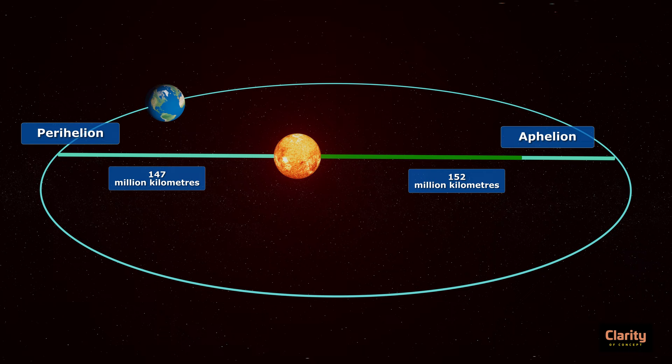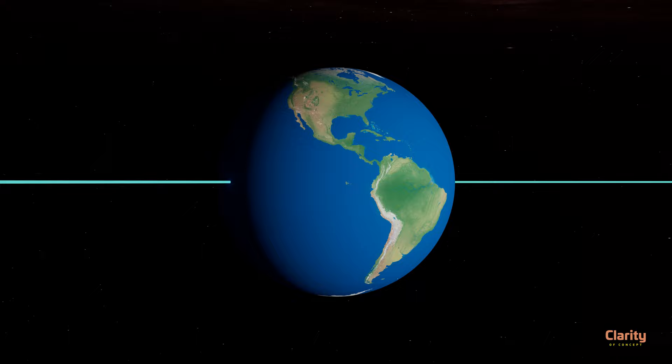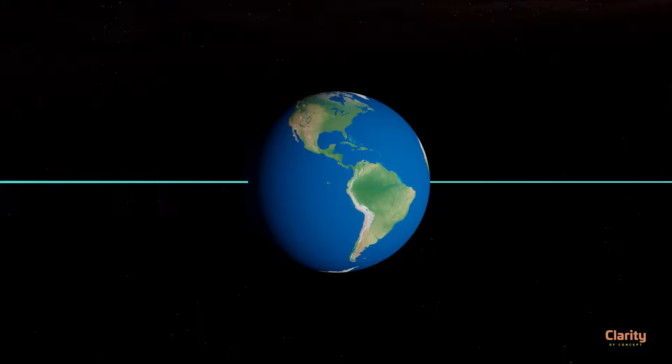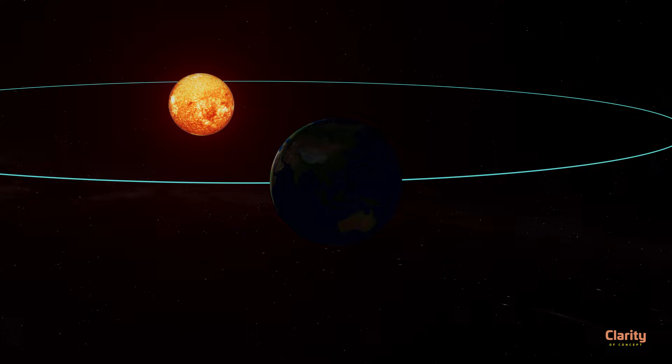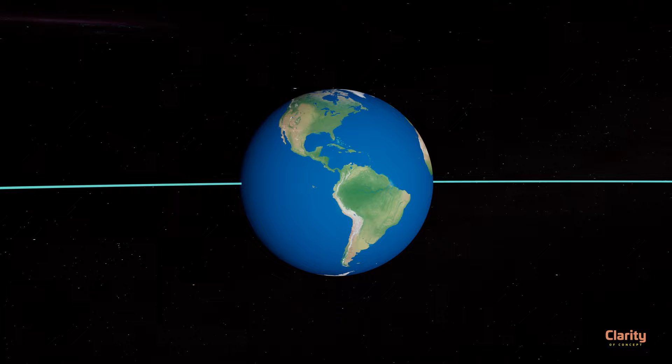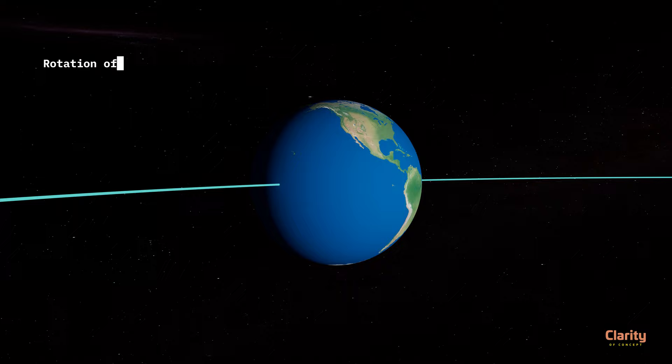Imagine earth was stationary on its axis but only revolved around the sun in an elliptical orbit. If the American continents faced the sun, it would always have been day in the Americas with broad daylight. The other side of the earth would always have had night with perennial darkness. But we know this is not the case — we have day followed by night in all places. This is because earth rotates on its axis while revolving around the sun. This rotation is responsible for day and night.